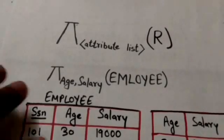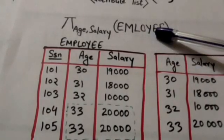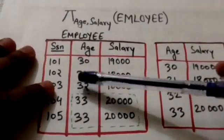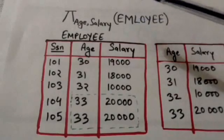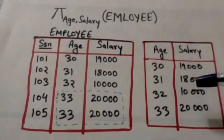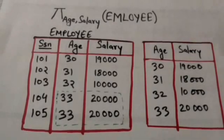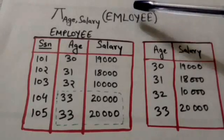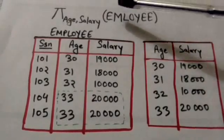For example, consider this project operation. Here, this is the employee relation. The result of this project operation is this relation. It has only two attributes: age and salary.